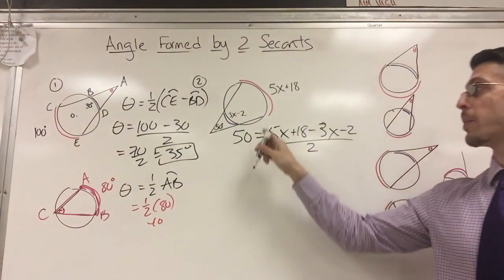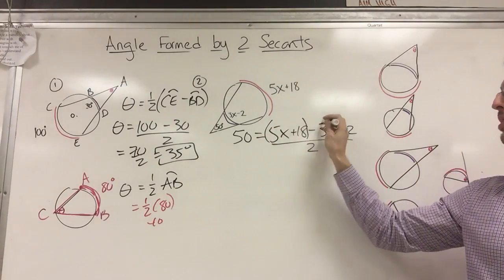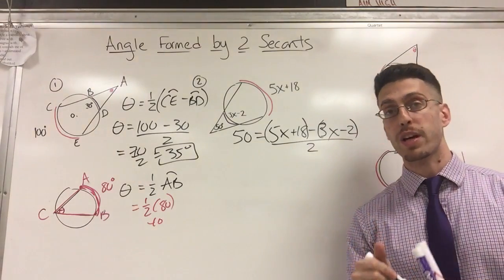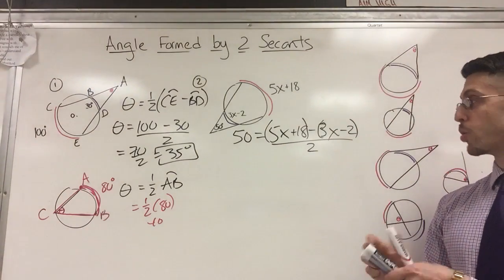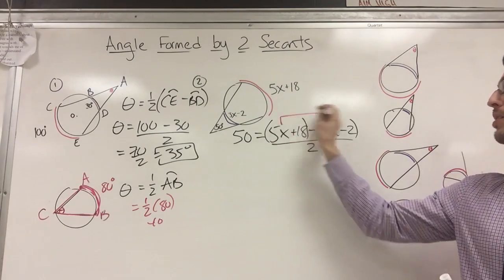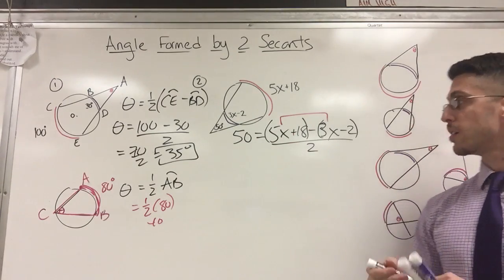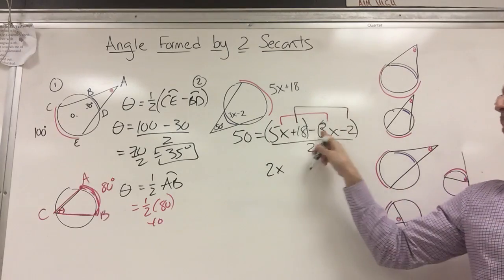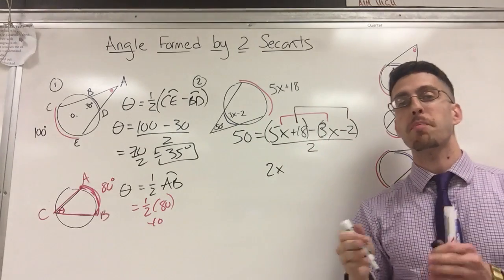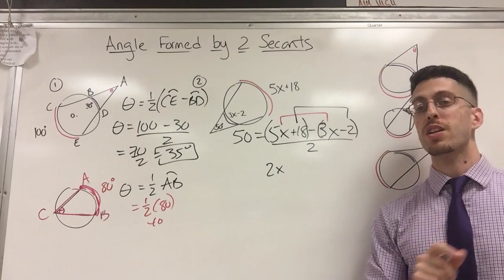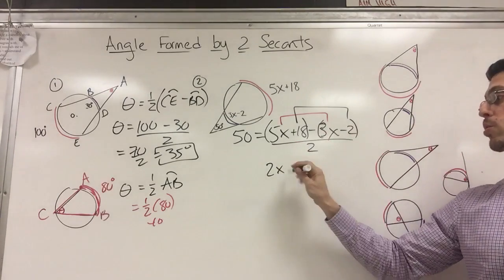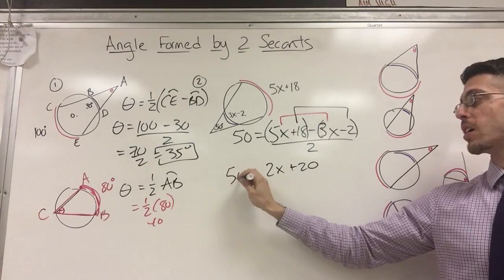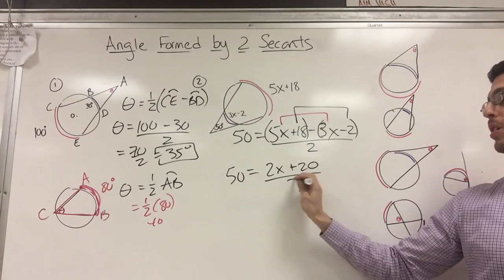And here's an annoying trick. It's the entire big arc minus the entire little arc. So you actually have to use your knowledge of subtraction. So I'm doing what? 5x minus 3x. So that is 2x. And then I'm doing 18 minus negative 2. 18 minus negative 2. If you keep change change, it's actually 18 plus 2, which comes out to be positive 20.